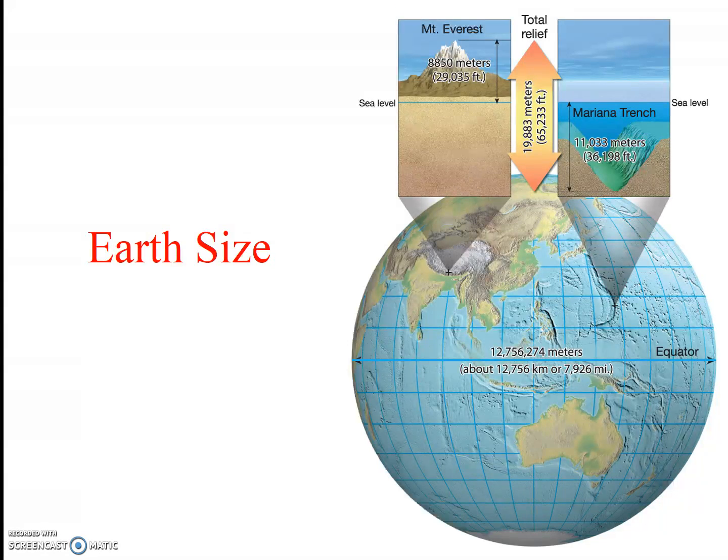When we discussed the size of the Universe, we saw that size is relative. Is the Earth big? Yeah, approximately 7,900 miles in diameter. But if you compare it to the solar system, galaxy, or universe, the Earth is infinitesimally small.